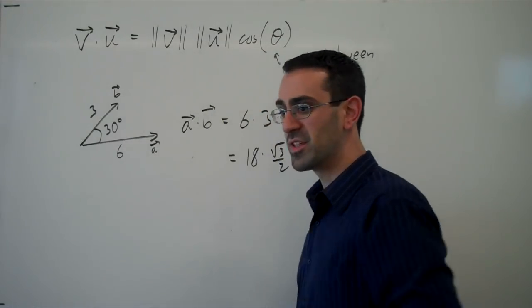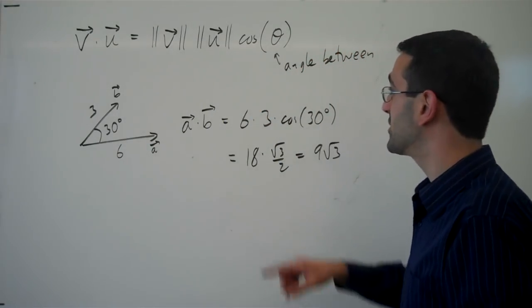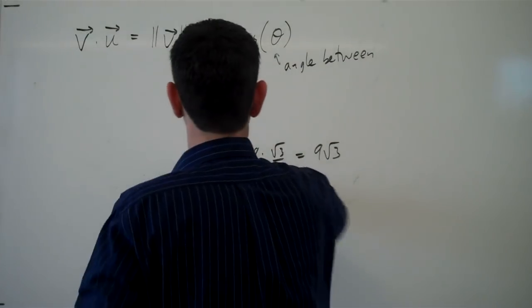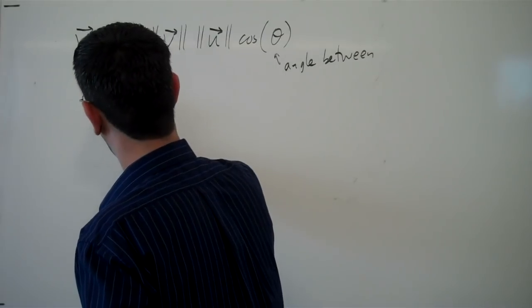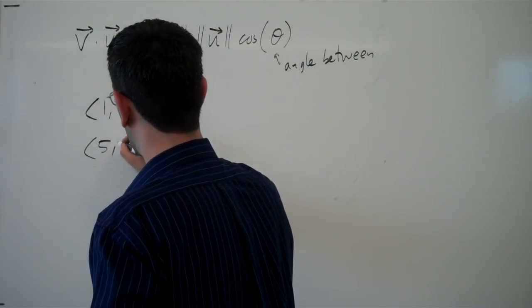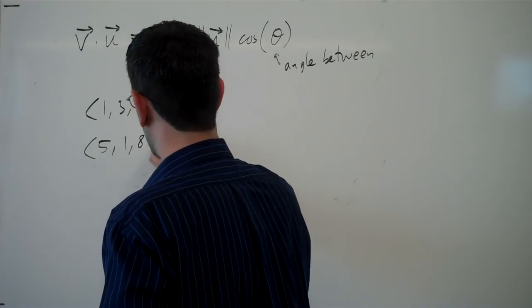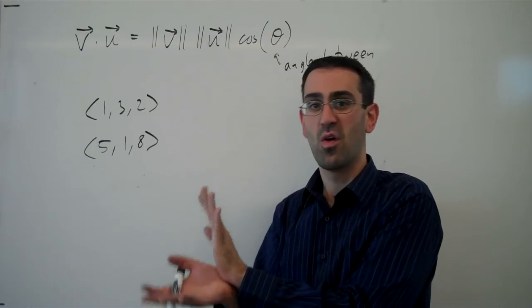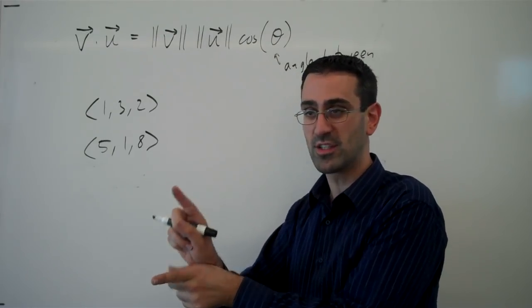Now the real power of this formula is that it allows us to find the angle between vectors. For example, if I had the vectors (1, 3, 2) and the vector (5, 1, 8), it's hard to imagine in three-dimensional space what the angle between those two vectors is going to be.